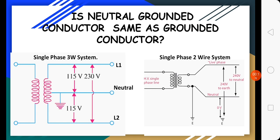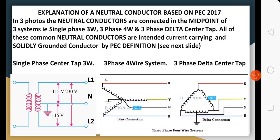This is the explanation of a neutral conductor based on the PEC 2017. In these three photos here, we have a single phase center tap three-wire system, a four-wire Y configuration system, and a three-phase delta center tap system. If you notice, the neutral conductor here is connected to the midpoint.